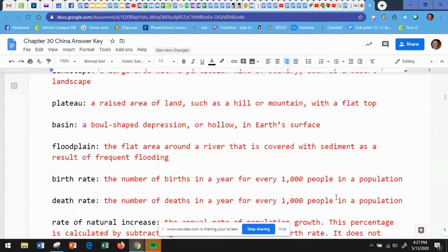A plateau is a raised area of land, such as a hill or a mountain with a flat top. A basin is a bowl-shaped depression or hollow in earth surface. A floodplain is the flat area around a river that is covered with sediment as a result of frequent flooding. So in other words, that sediment might be really good to grow things because it floods and brings a lot of minerals in and it's near a river. So because it's flat, it might actually be a good place to grow crops.